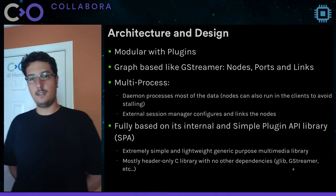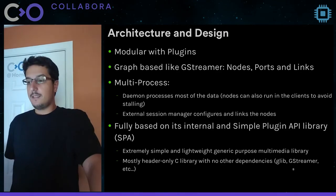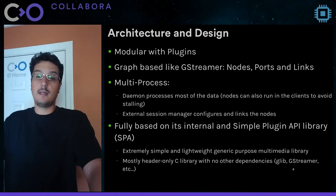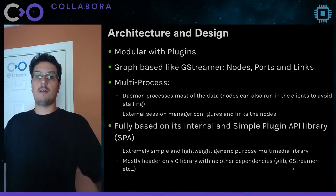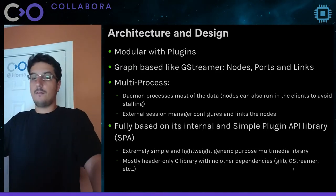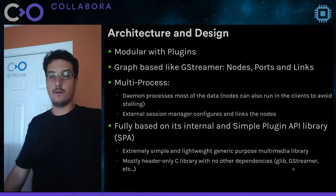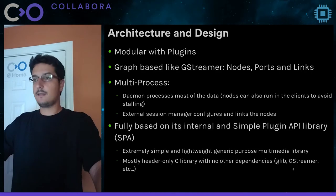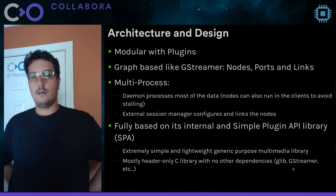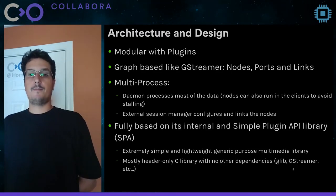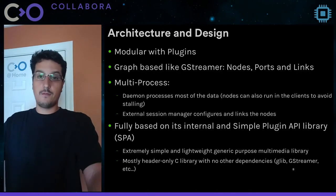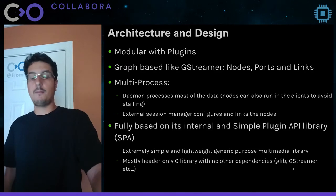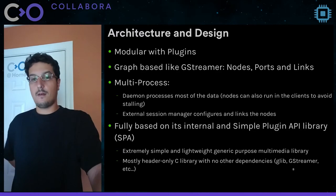In terms of architecture and design, PipeWire follows the same design as most open source projects: it's modular and has plugins. A module in PipeWire is essentially an API — for example, you have a module for Bluetooth, Video for Linux, Wayland, Vulkan, and ALSA. Plugins are elements inside these modules that implement different functionalities, such as nodes that implement audio mixing, format conversion like video or audio conversion, and resampling. You can write plugins for PipeWire that do any kind of media processing.